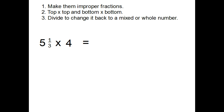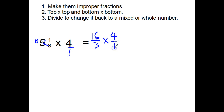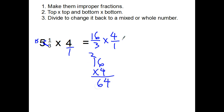All we did here is change the order of the mixed number and the whole number, so I'm still doing the same thing. Making improper fractions: five times three is fifteen, plus one is sixteen, so we get sixteen thirds. And four — I'm just putting the one underneath to make it an improper fraction. We've got sixteen times four, which is sixty-four, over three.